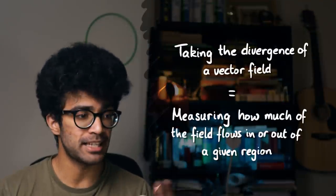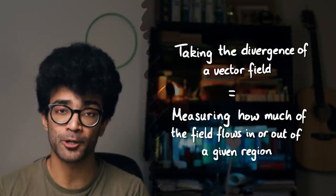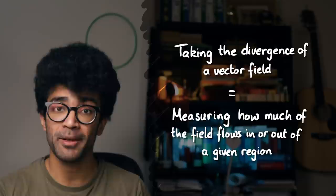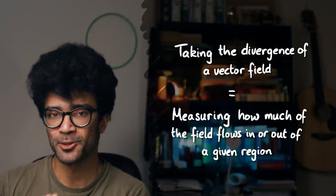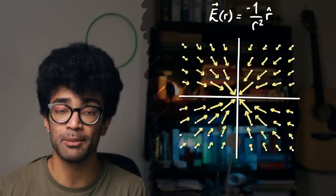Huge thanks to Mr. Higgsino for that explanation — head over to his channel and give him a subscribe. We've just seen what it means to take the divergence of a vector field: essentially measuring how much of that vector field flows in or out of a particular region of space. An interesting example was the one-over-r-squared vector field.